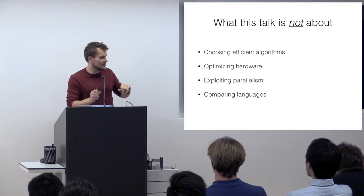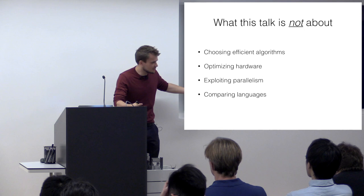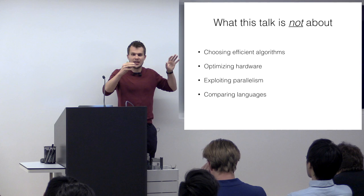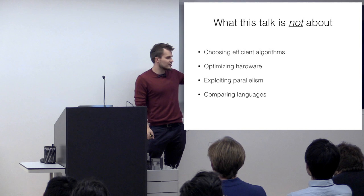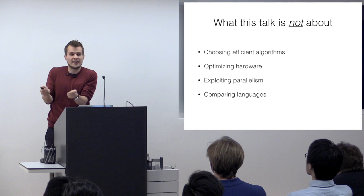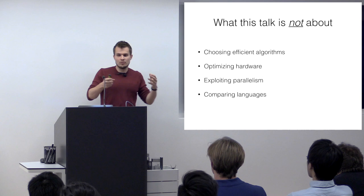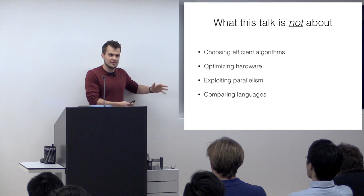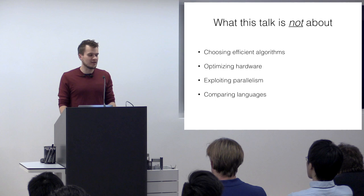Finally, maybe somewhat surprisingly, I don't actually want to talk much about comparison of languages. It is clear that OCaml is the best programming language, and this talk will use OCaml to explore certain topics, but I hope the talk is broader than that and has applicable lessons in any programming language. I'm not particularly interested in arguing OCaml is the best language for this. Given the constraints we have — one of which is we're going to use OCaml — the question is how do we achieve being as fast as we can. I mostly want to convince you that you can do it in OCaml, not that you must.